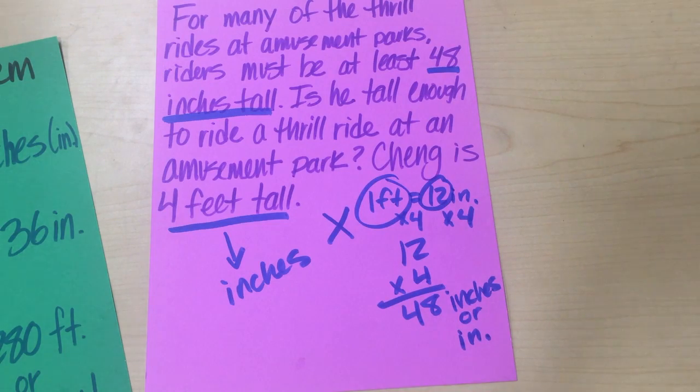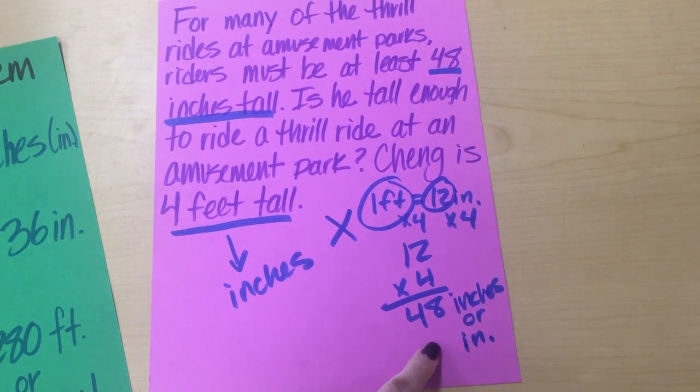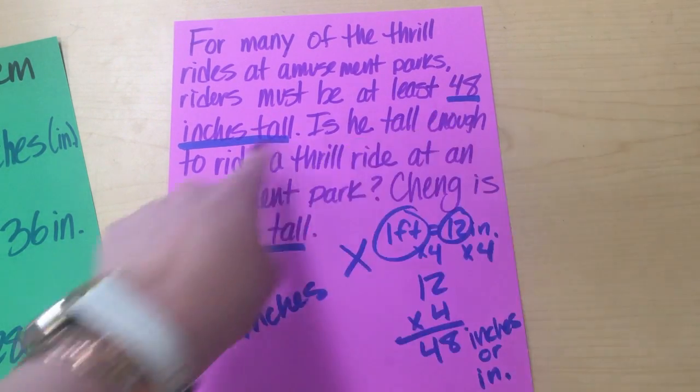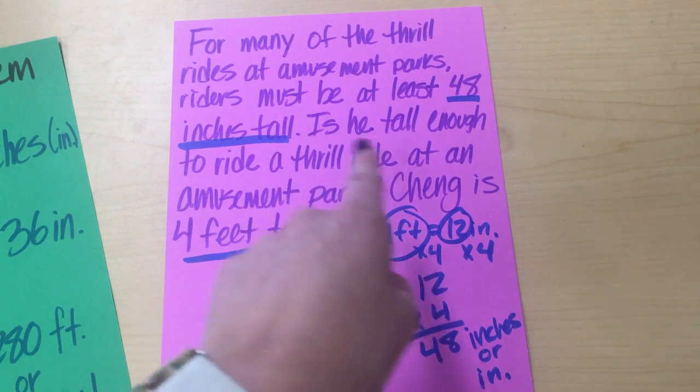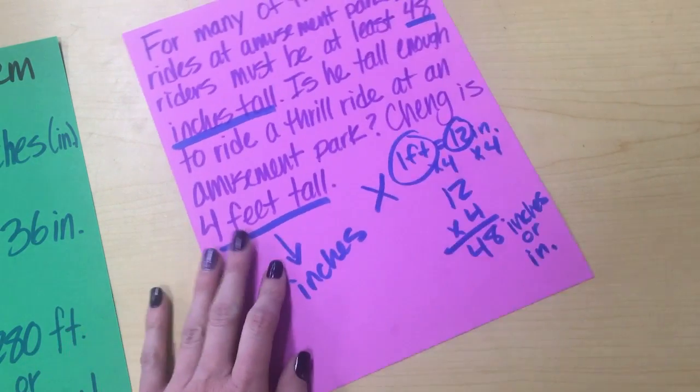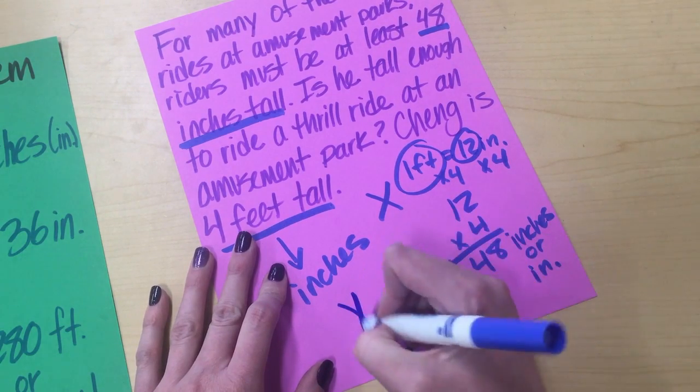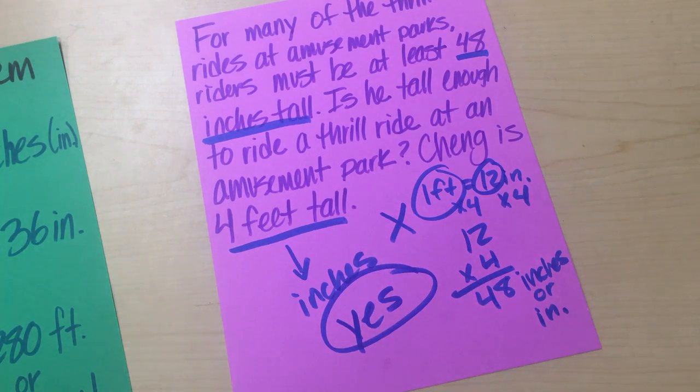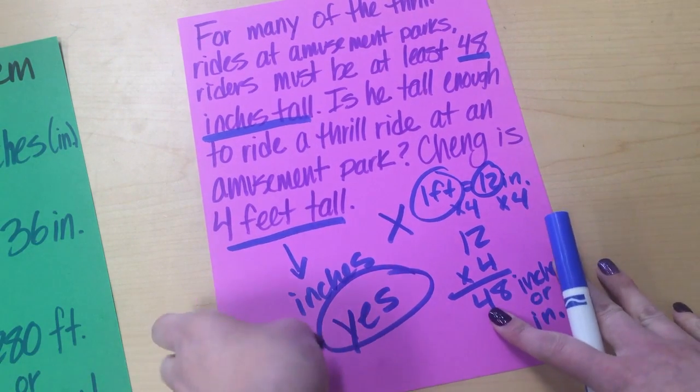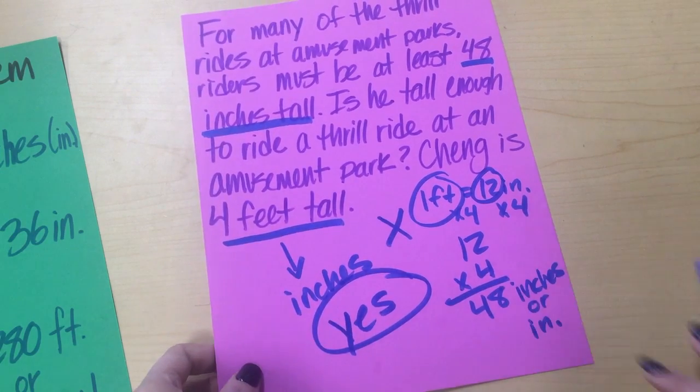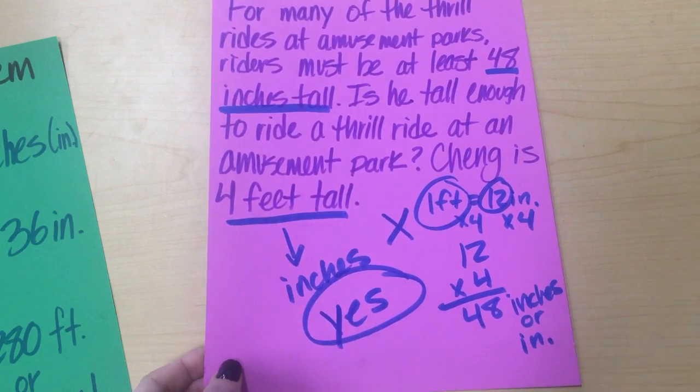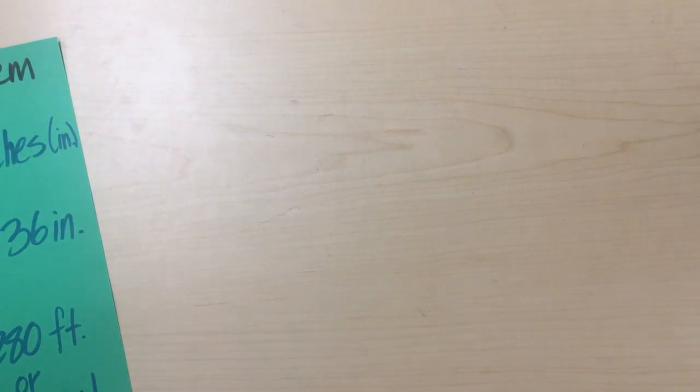So is he tall enough to ride the rides? Let's see. He's 48 inches tall. He has to be at least 48 inches tall. So is he tall enough to ride the thrill ride? Yes, he is. I know it's kind of a little confusing, but as we go through, hopefully it'll make more sense. Maybe you got it right away. I'm not quite sure. Now let's go to our next problem.